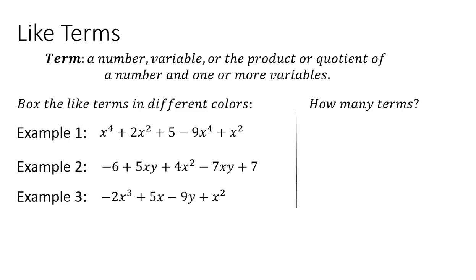A term is a number, variable, or the product or quotient of a number and one or more variables. We're going to be boxing the like terms in different colors in each of the examples, then looking at how many terms are in each expression. In example 1, we have x to the fourth — I'm putting a box around that and also around negative 9x to the fourth, making sure to include the negative. Then 2x squared and plus 1x squared are also like terms. The constant 5 has no other constant match, so we have five terms in this expression.